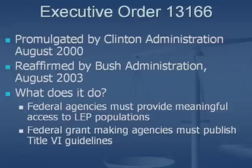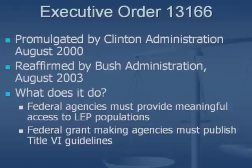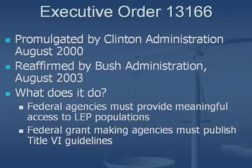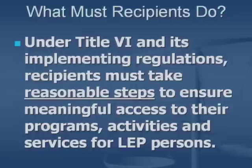The second aspect we'll discuss is an executive order first promulgated by the Clinton administration in August 2000 and reaffirmed by the Bush administration in August 2003 — Executive Order 13166. It requires federal agencies to do two things: ensure that publications and services are available in languages other than English to provide meaningful access to limited English proficient persons, and requires federal grant-making agencies like the Department of Health and Human Services to publish Title VI guidelines explaining what steps entities receiving federal assistance need to take to ensure compliance.